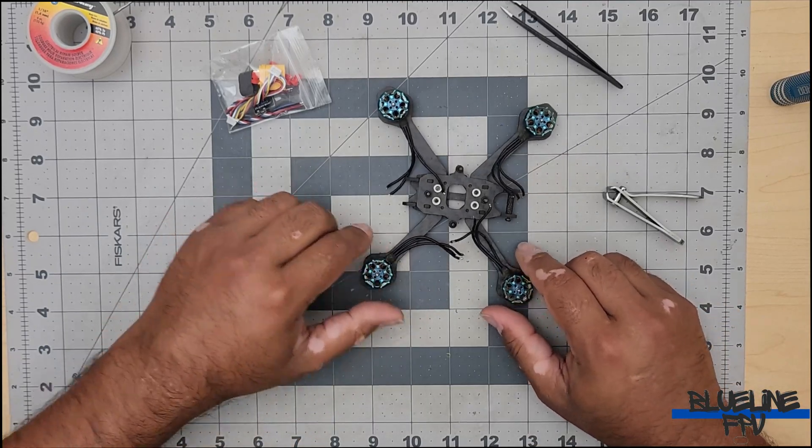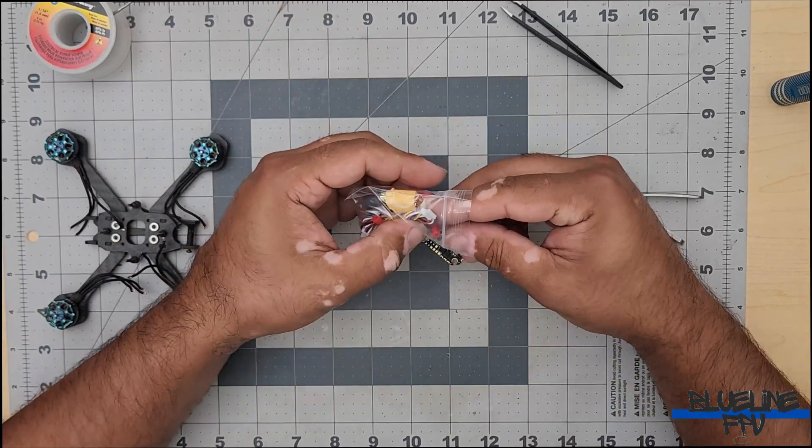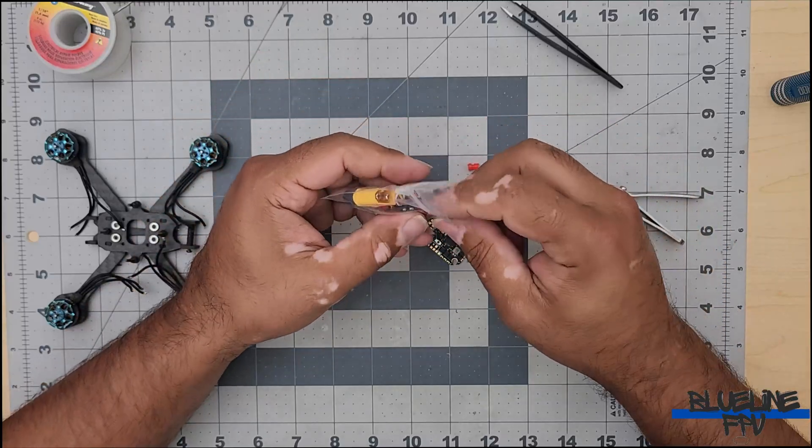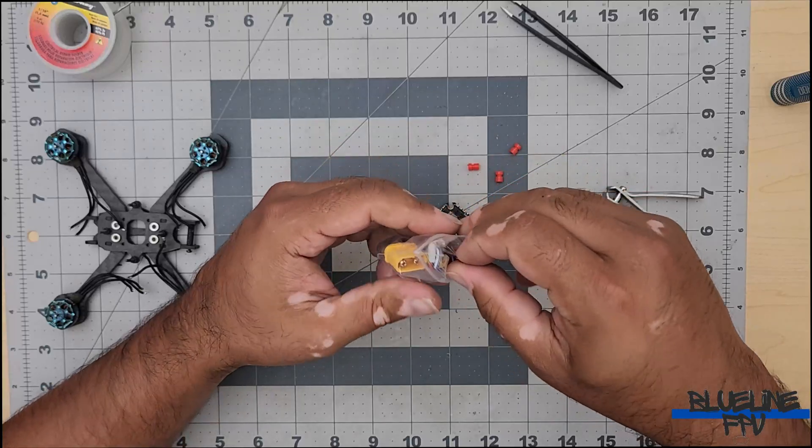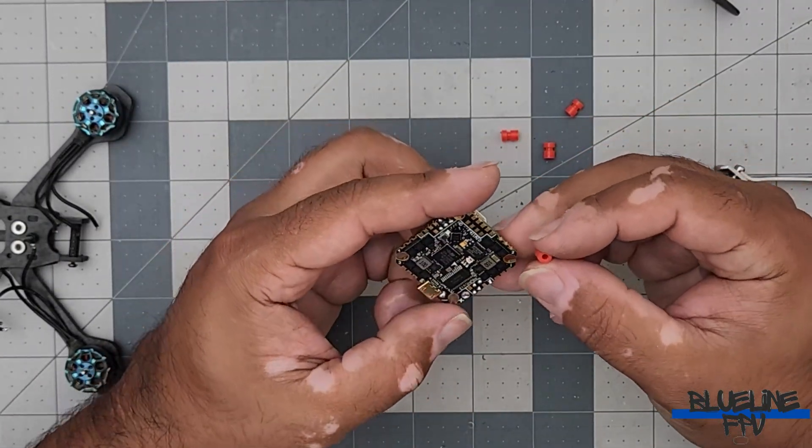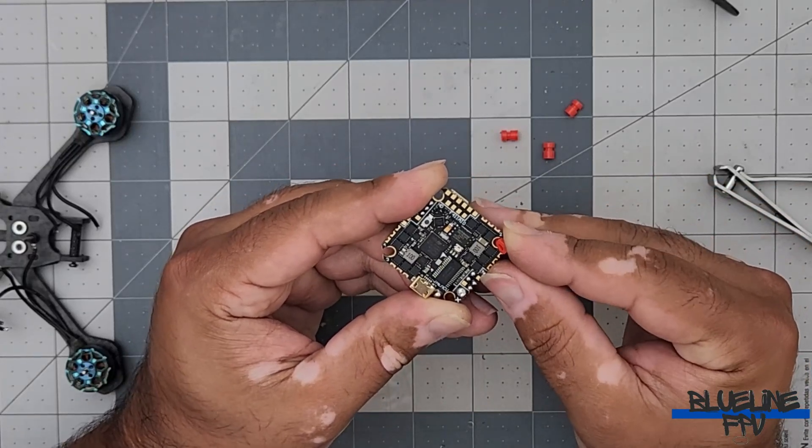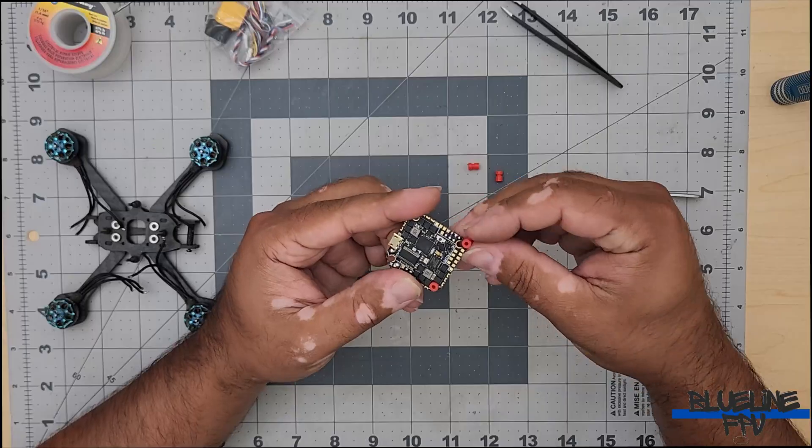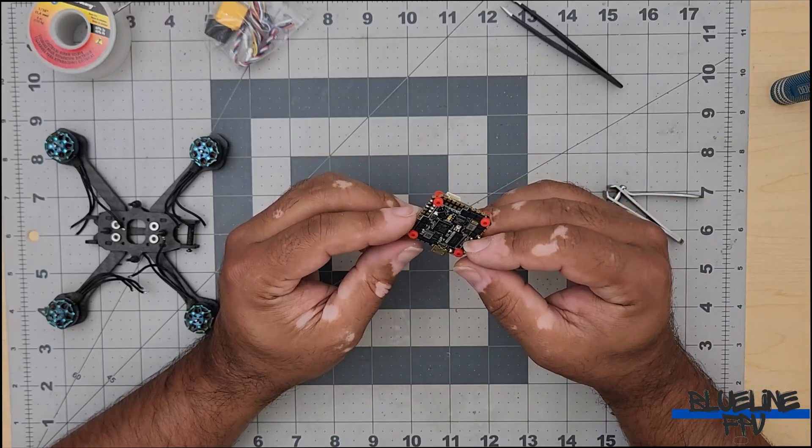So now comes one of the most pain in the butt parts, and that is feeding these little red things through the flight controller itself. Probably one of the most annoying things about building a drone. Looks like this one here might be a little easier to do because they are cut out on the side. Look at that. So easy. I've never had these things go in that easy. That is awesome.